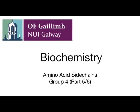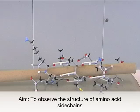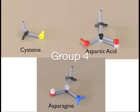Amino acid side chains. This is part 5 of the 6 part series. The aim of this segment is to observe the structure of amino acid side chains. Group 4 will construct cysteine, aspartic acid and asparagine.